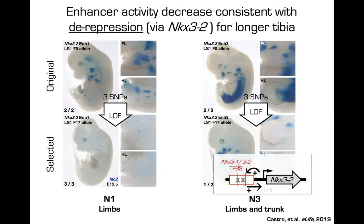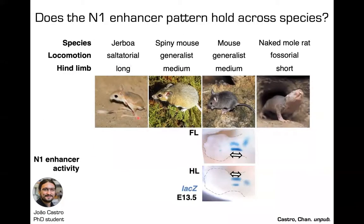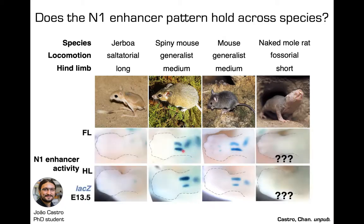The N1 enhancer drives quite nicely limb bud expression, with expression in the condensating area for future bone formation. The N3 enhancer also drives expression in the limb bud but more dispersed in the trunk. When you swap the three SNPs that differ between the selected and original alleles in the enhancers, you get two dead enhancers — completely removing the enhancer function. Two of the three SNPs for the N3 enhancer sit on a predicted transcription factor binding site, suggesting an abrogation of an auto-feedback loop leading to lower expression of this negative bone regulator.